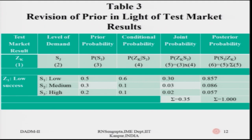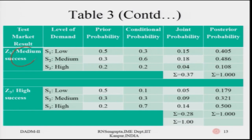What you do next is combine the results of test marketing with the prior probabilities you had for different price points. For example, if you have a low success test market result, these are the prior probabilities for different segments — low, medium, and high. You find out the conditional probability from the previous slide and you find out the posterior probability: what is the probability that the segment is actually a low demand segment given that the test result also showed low success? That is how you calculate the posterior probabilities for all the segments given that the test result falls into a certain category — low success, medium success, or high success. Similarly, you calculate the posterior probability for medium success and high success test results.